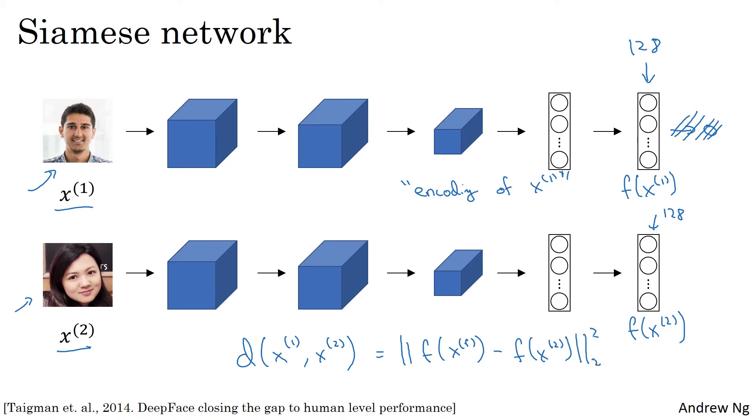So this idea of running two identical convolutional neural networks on two different inputs and then comparing them, sometimes that's called a Siamese neural network architecture.